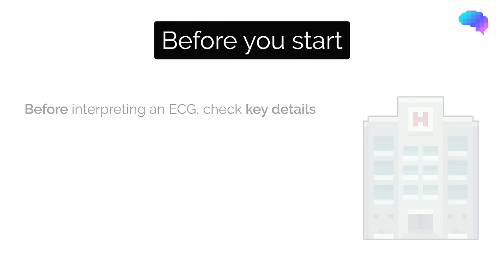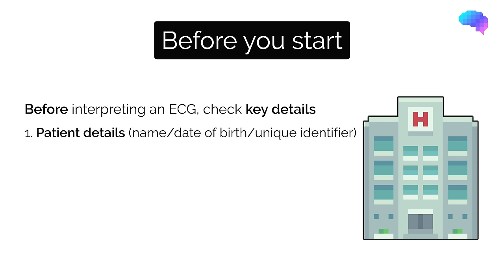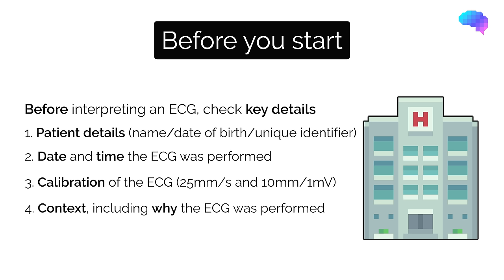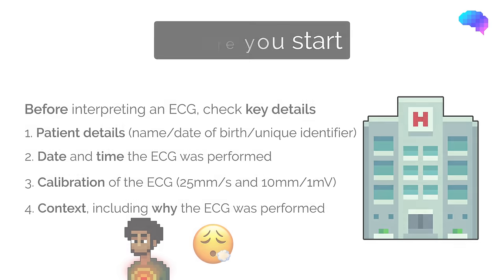Before beginning ECG interpretation you should always check the following details. Firstly, confirm the name and date of birth of the patient and check this matches the details on the ECG. Check the date and time that the ECG was performed. Check the calibration of the ECG. You should also understand the clinical context and why the ECG is being performed — for example, does the patient have any symptoms such as chest pain or breathlessness? Knowing the clinical context and the indication for performing the ECG will help you in your overall interpretation.